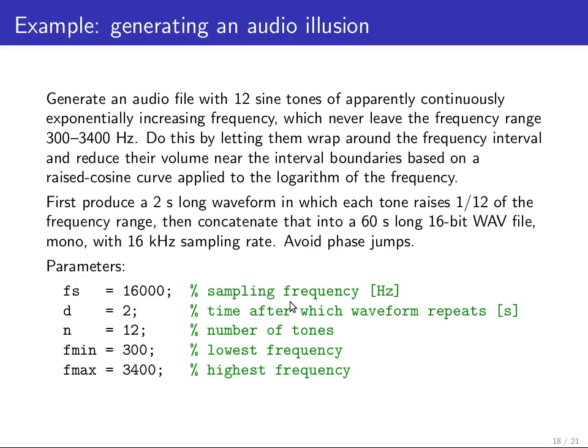The goal of the exercise is to create an audio file with 12 sine tones of apparently continuously exponentially increasing frequency, but they actually never leave the frequency range of, for example, 300 to 3400 Hz. That's roughly the frequency range that the telephone network can transmit, so you can show someone the illusion through a telephone.